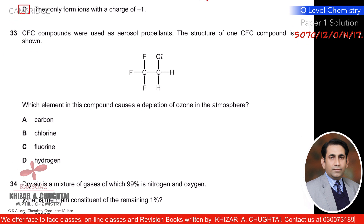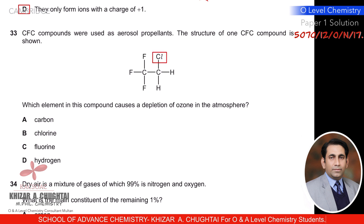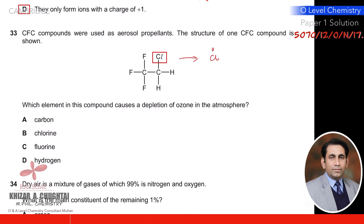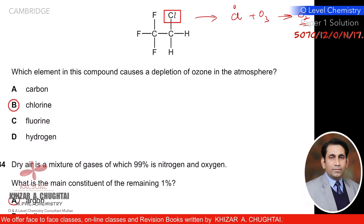Question thirty-three: CFC compounds were used as aerosol propellants. The structure of one CFC compound is shown. Which element causes depletion of ozone in the atmosphere? It is chlorine — Cl radicals formed from this compound react with ozone. So B is the correct option.